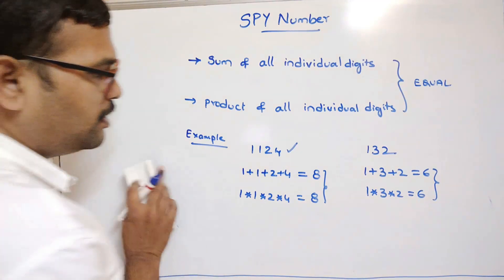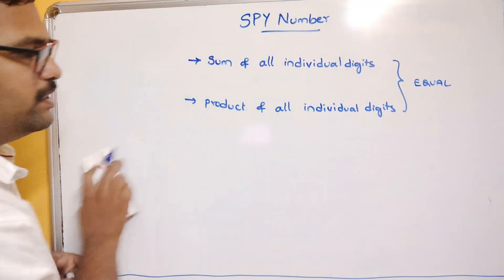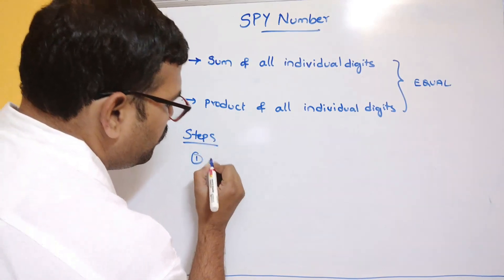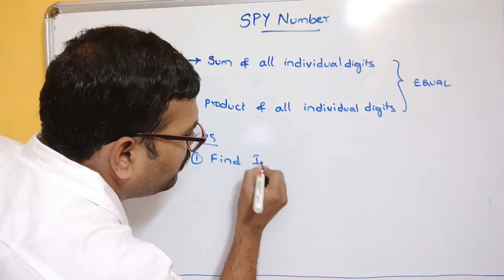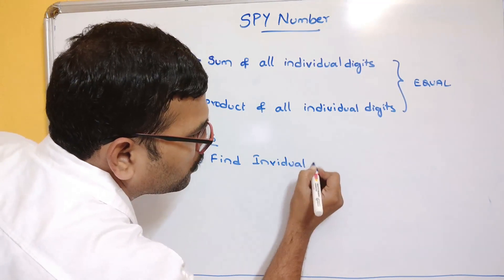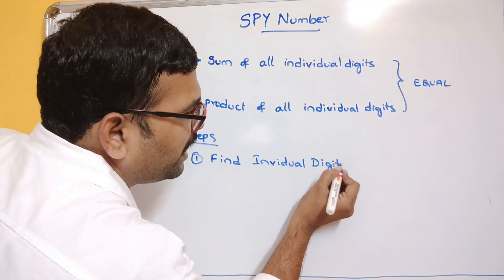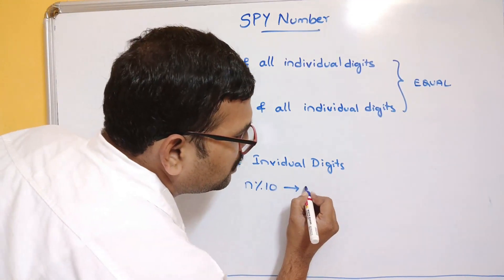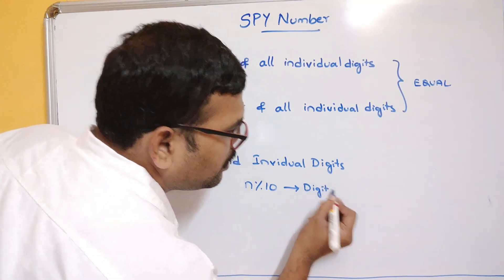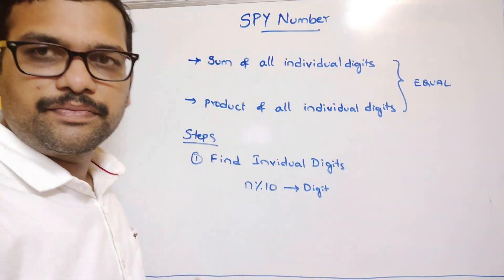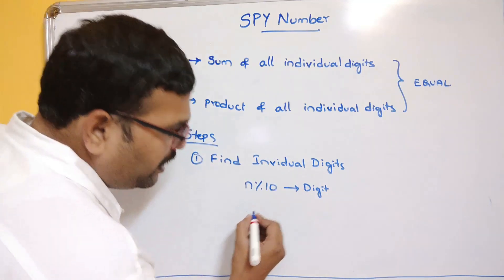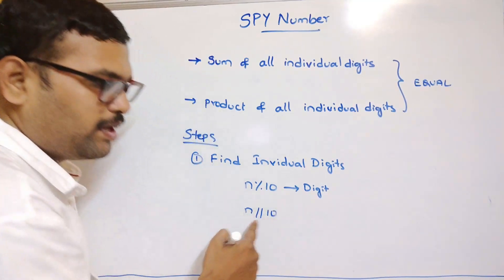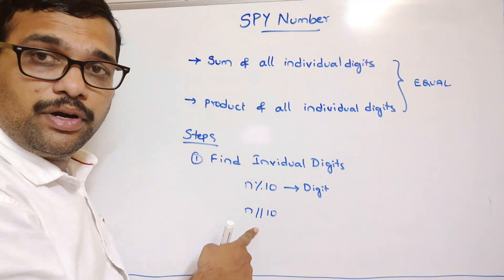So what do we have to find out? The steps are: first, find the individual digits. In order to find individual digits, n mod 10 will give the digit — it starts from the ones place. Then, to reduce the number for the next iteration, we use n double-slash 10, which is a floor division.